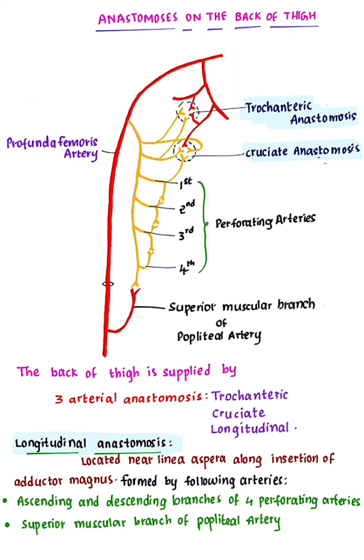The back of the thigh is supplied by three arterial anastomoses: the trochanteric anastomosis, the cruciate anastomosis, and the longitudinal anastomosis.